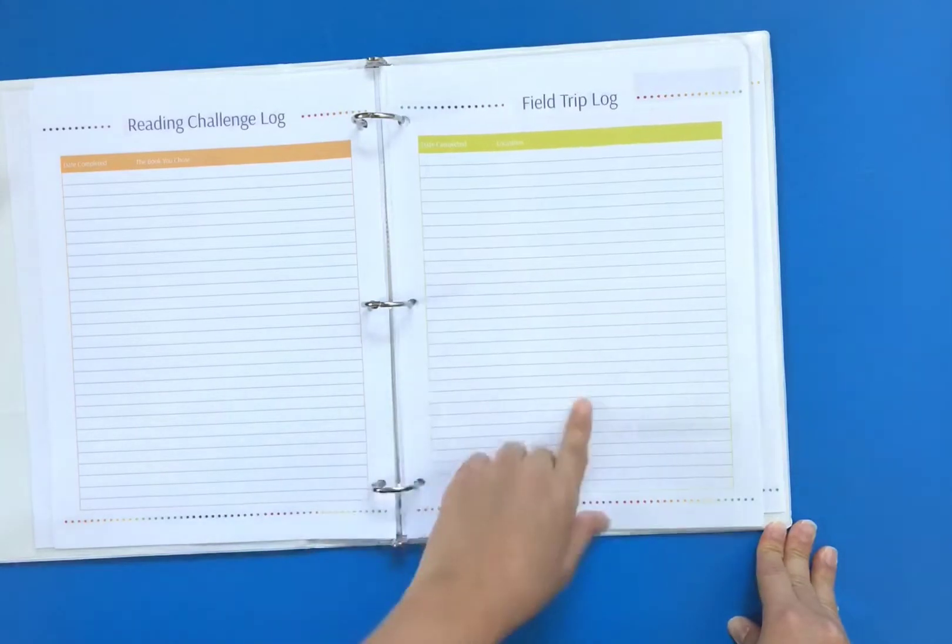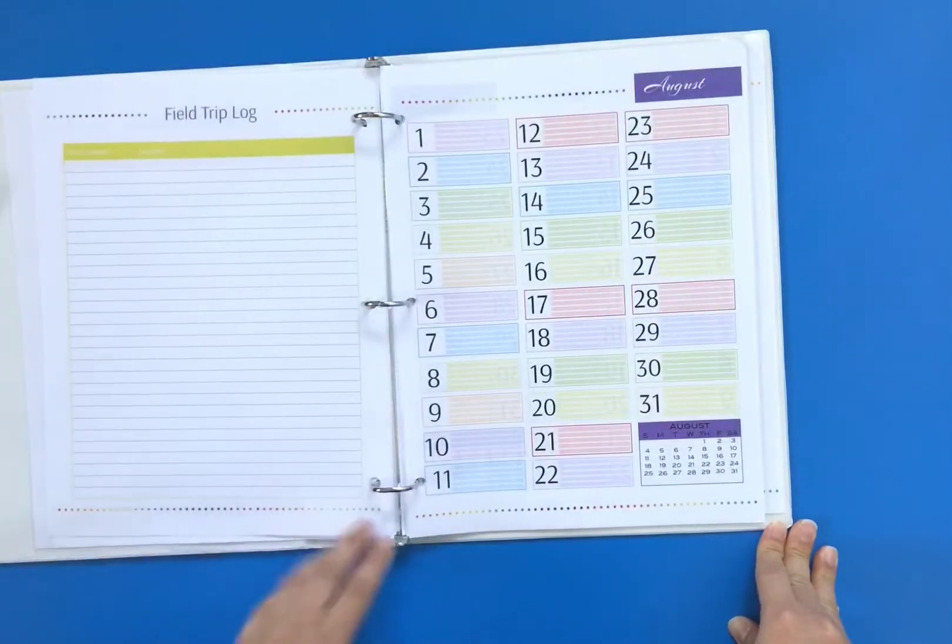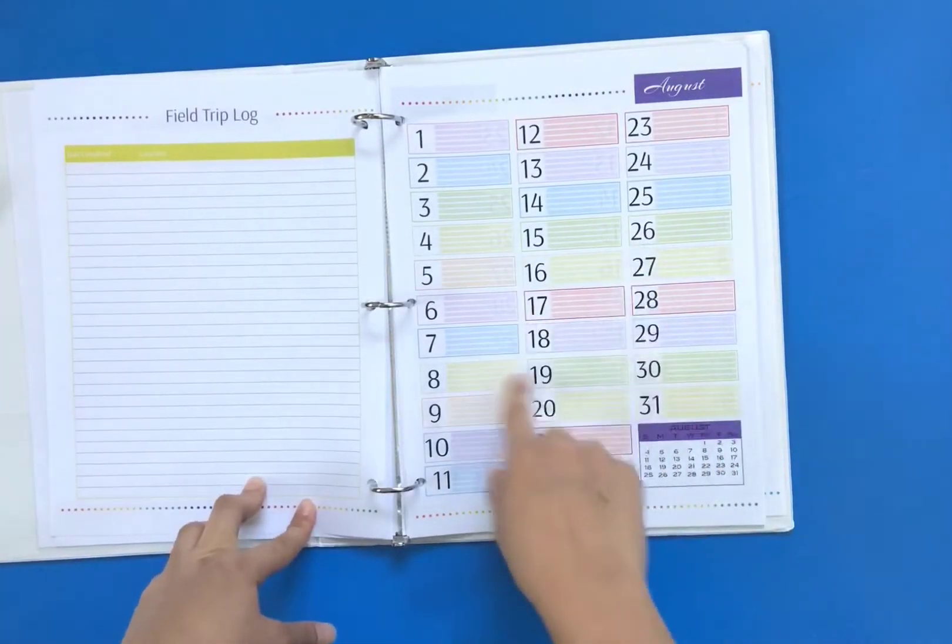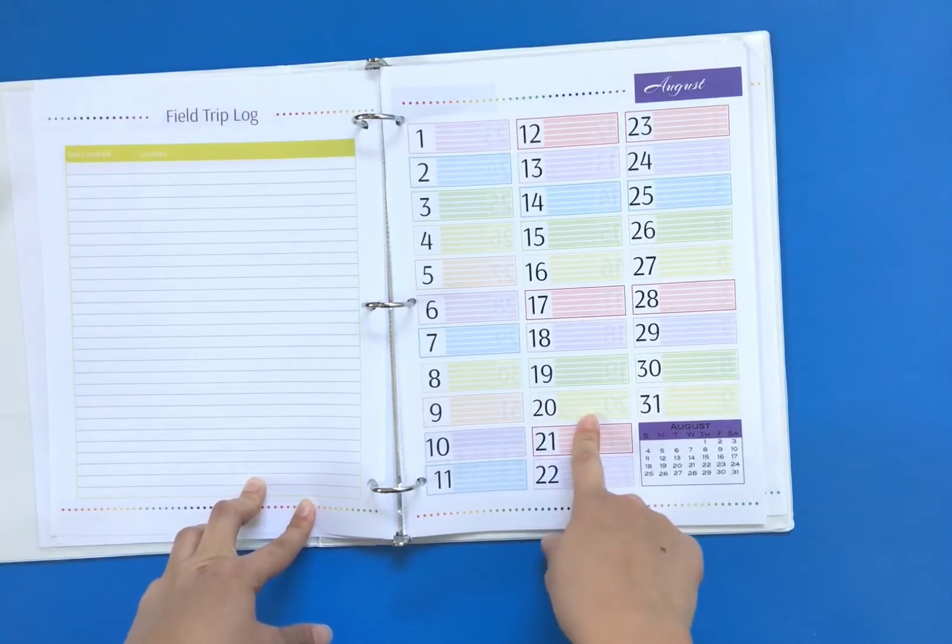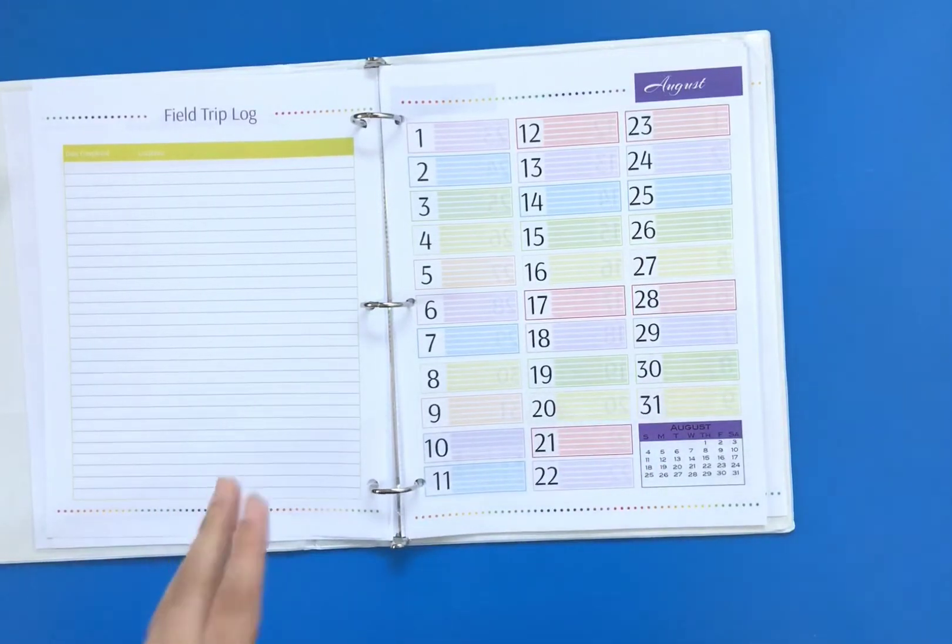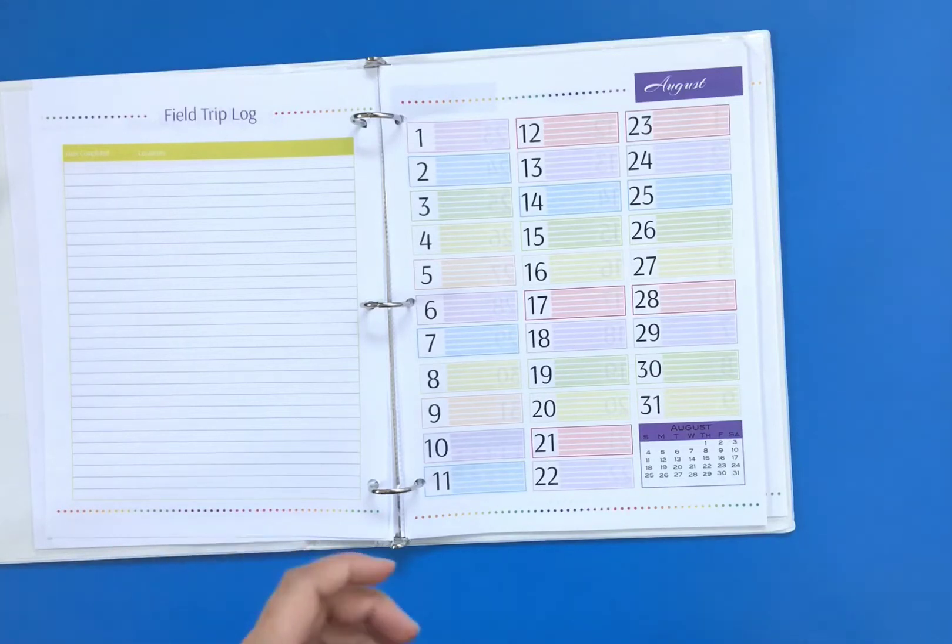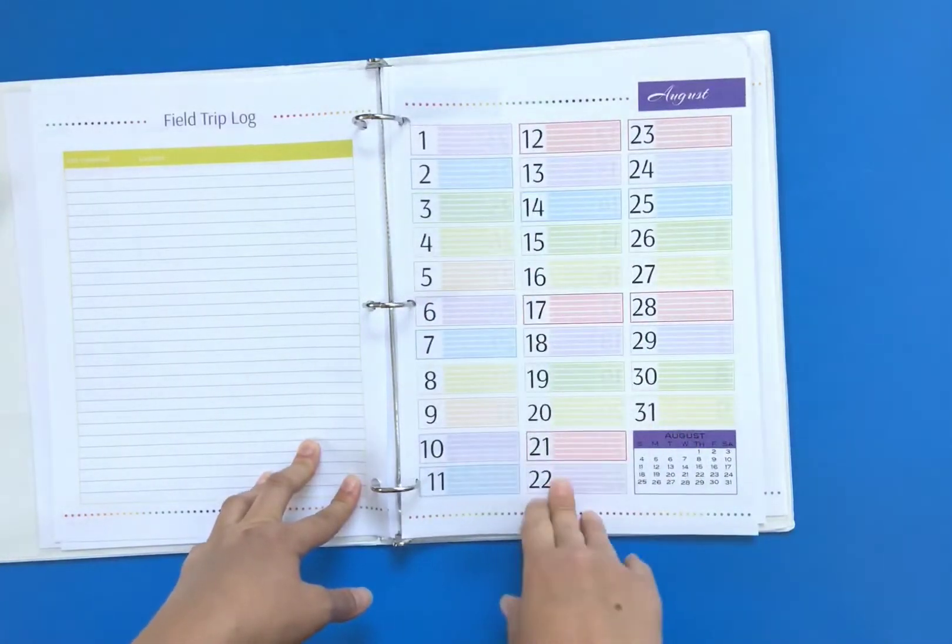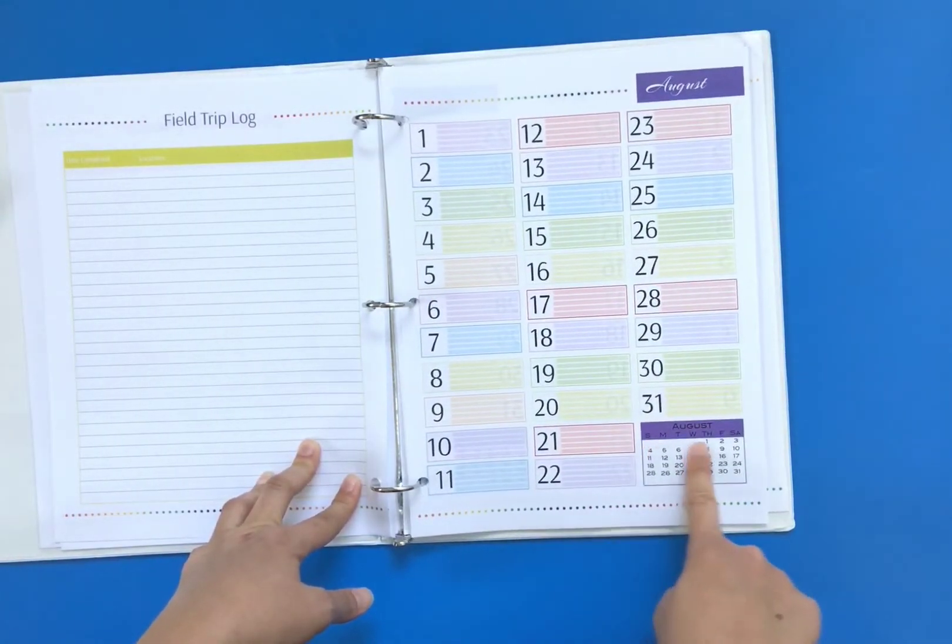The biggest thing I customized was the calendar. The problem I had with other planners was that the calendar section was too small and I didn't have enough room to write stuff, so I just made it really big. If I need to know what day of the week a day falls on, I can just look at this little calendar.